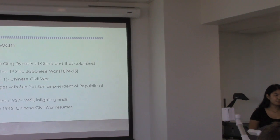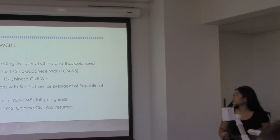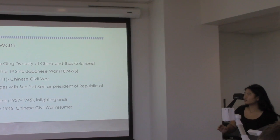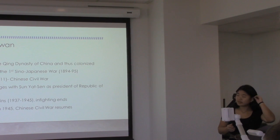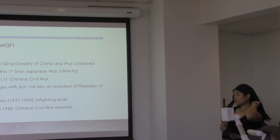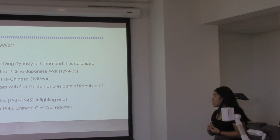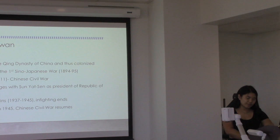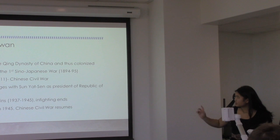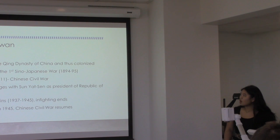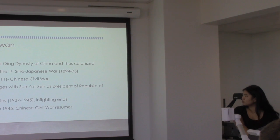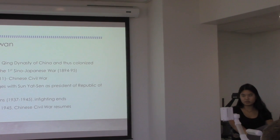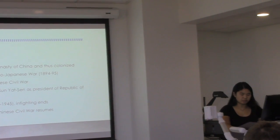Some background information: Taiwan has been a colony of China for a very long time. It was annexed in 1683 by the Qing Dynasty and turned over to Japan after the first Sino-Japanese War of 1894 to 1895. When the Qing Dynasty collapsed, there was a Chinese Civil War that lasted for an incredibly long period, almost up to 1949 when the KMT lost.